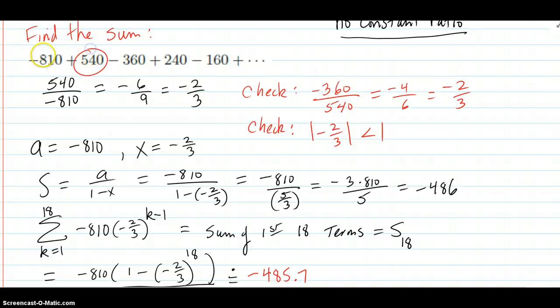So 540 divided by negative 810 is negative 2 thirds. Negative 360 divided by 540 is negative 2 thirds. And if you check the rest, it is. So that part checks out.